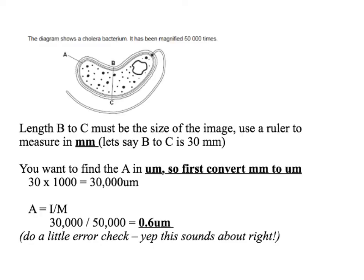Do a little error check. That sounds about right for a bacterium — a bacterium isn't usually more than 10 micrometres long, so 0.6 for the width sounds about right.